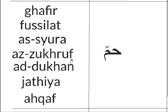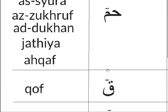Seven surahs use Ha-Mim: Ha — 2 harakat, Mim — 6 harakat. And Qaf: Qaf — 6 harakat, with the F at the end.